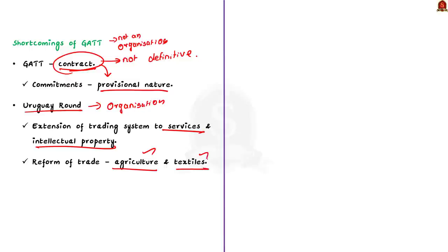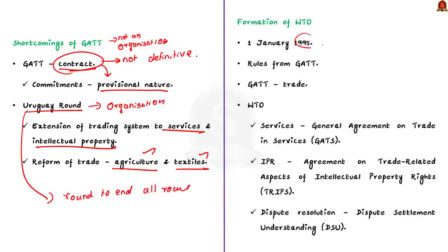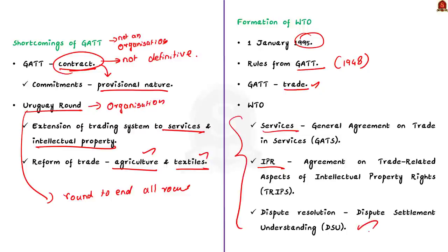This round is ironically called the 'round to end all rounds.' WTO began on 1st January 1995. Even though it was created in 1995, GATT had been providing rules since 1948. GATT mainly dealt with trade in goods, but WTO and its agreements also covered trade in services and intellectual property. The birth of WTO also created new procedures for the settlement of disputes. For services, we have the General Agreement on Trade in Services (GATS). For IPR, we have the Agreement on Trade Related Aspects of Intellectual Property Rights (TRIPS). For dispute settlement, we have the Dispute Settlement Understanding.